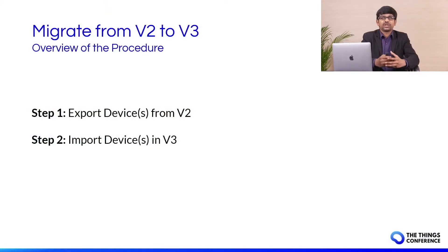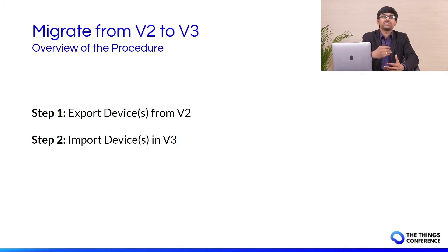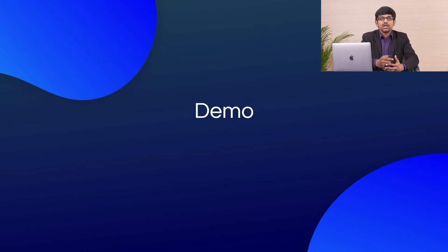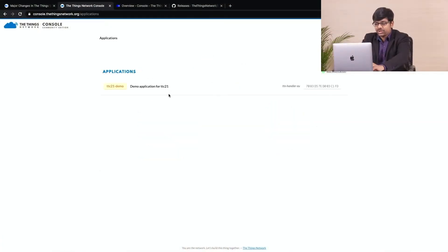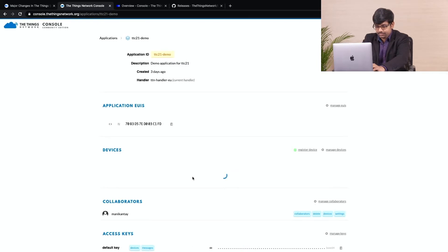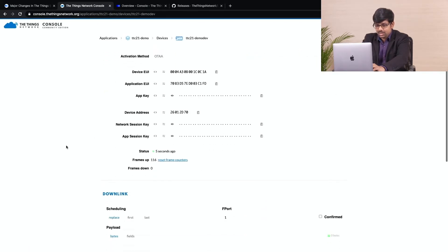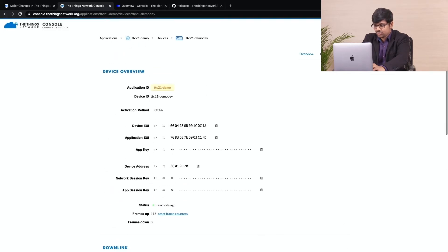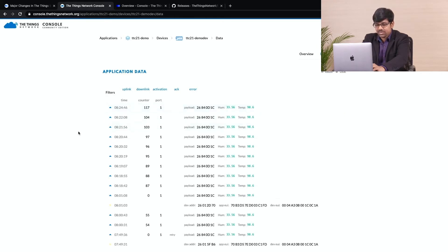Coming to the migration procedure, it is a simple two-step process. Step one includes exporting the device details from V2 into a JSON file — this is done using the LoRaWAN stack migrate tool. Step two is importing the devices in V3 using the JSON file from step one — this can be done from the V3 console. Now, let us start with migrating a device. I have a Things node with me here, which is registered on my V2 console. It is actively sending uplinks with sample humidity and temperature data. So, we shall be migrating this device from V2 to V3 console.